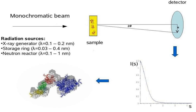As the SAS measurements are performed very close to the primary beam, the technique needs a highly collimated or focused X-ray or neutron beam.